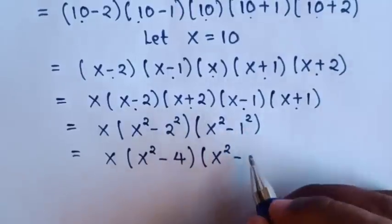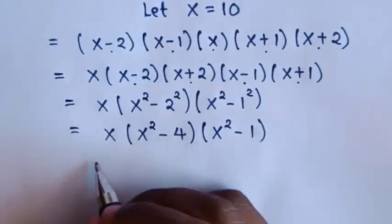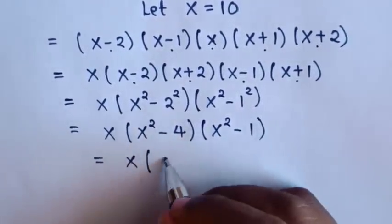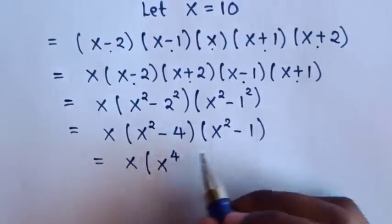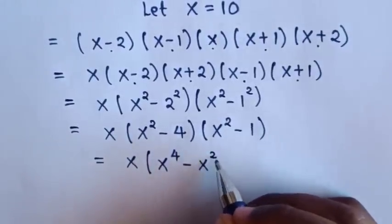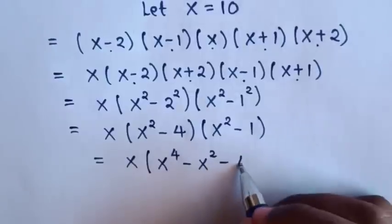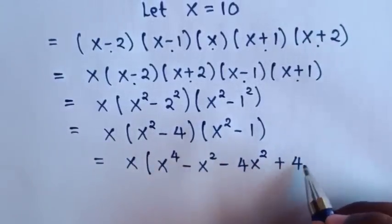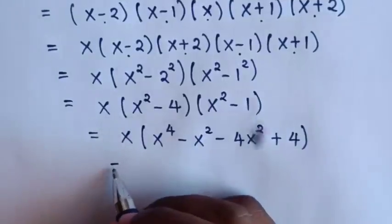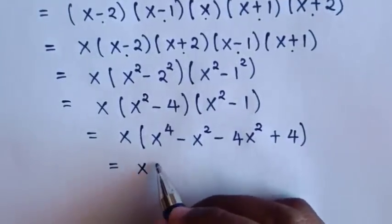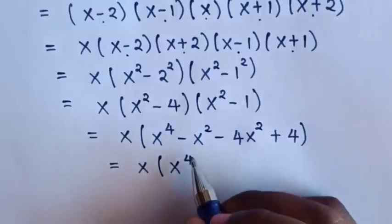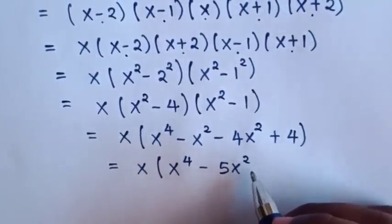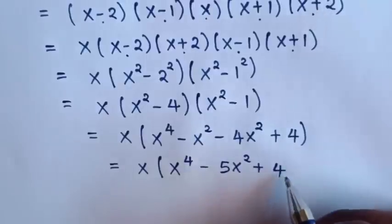So it will be equal to x times — expanding (x squared minus 4)(x squared minus 1): x to the power 4, minus x squared, minus 4x squared, plus 4 — which gives x times (x to the power 4 minus 5x squared plus 4).